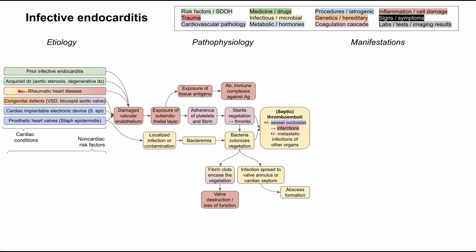Rheumatic heart disease — which comes from a throat infection but later becomes an inflammatory process where the immune system reacts to an exposed antigen — can also cause damaged valvular endothelium. Congenital defects like a VSD and a bicuspid aortic valve similarly predispose to damaged endothelium. Cardiac implantable devices, including pacemakers and ICDs, predispose to Staph epidermidis infection. Prosthetic heart valves also predispose to Staph epidermidis, and the placement procedures themselves can introduce infection through the skin.